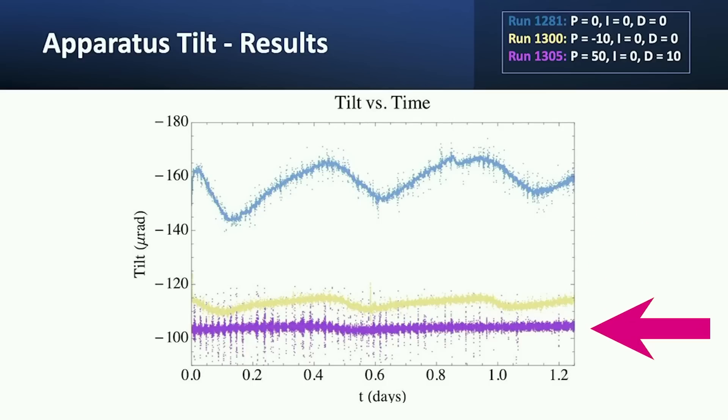You see the very first runs shown at the top with no components of proportional integral derivative included, and then the final term which has the lowest variation, the lowest oscillatory behavior over 1.2 days worth of data, and that shows the best behavior.